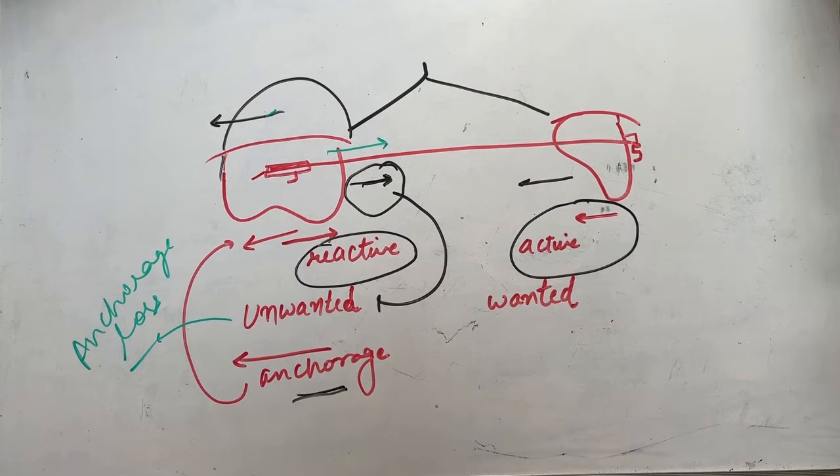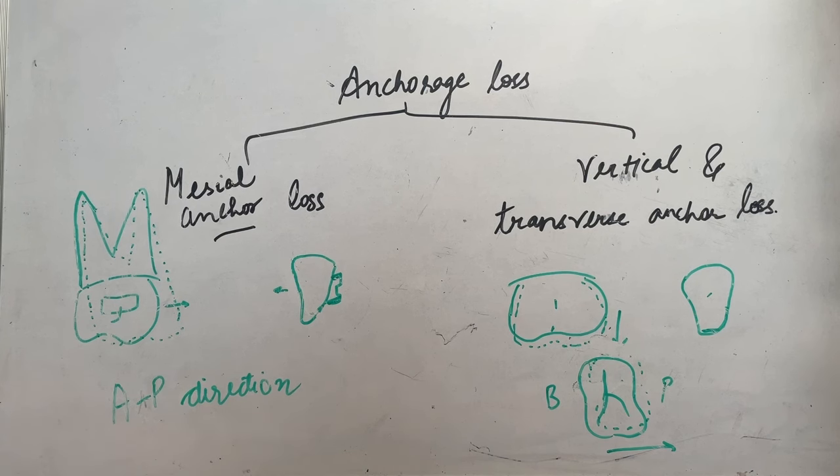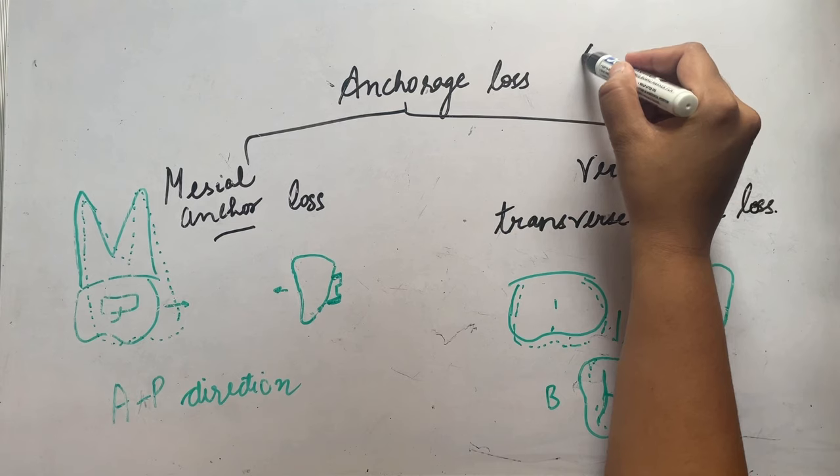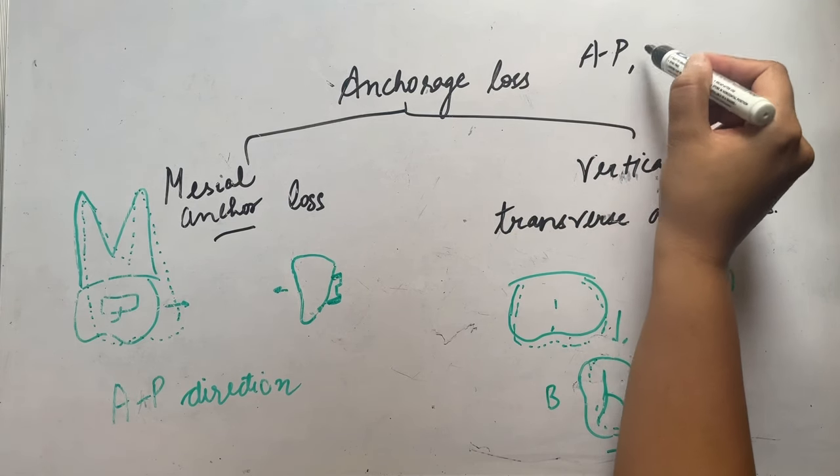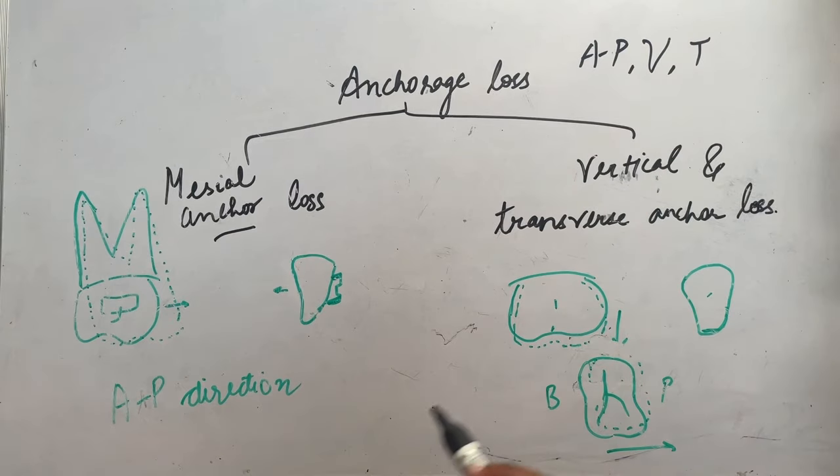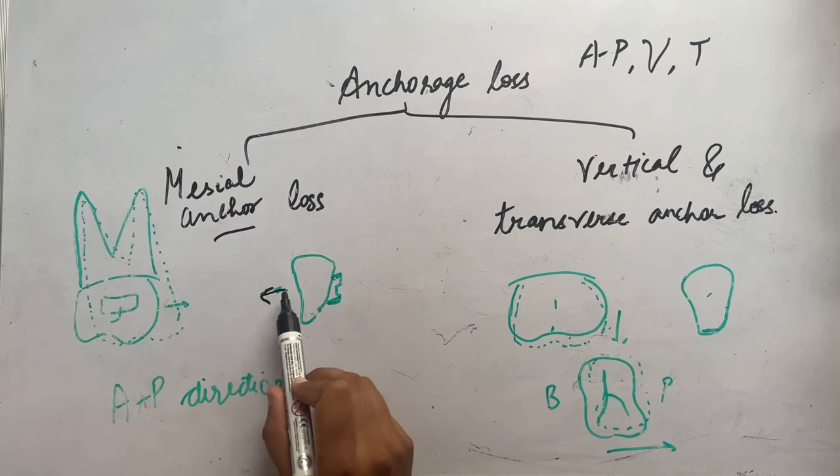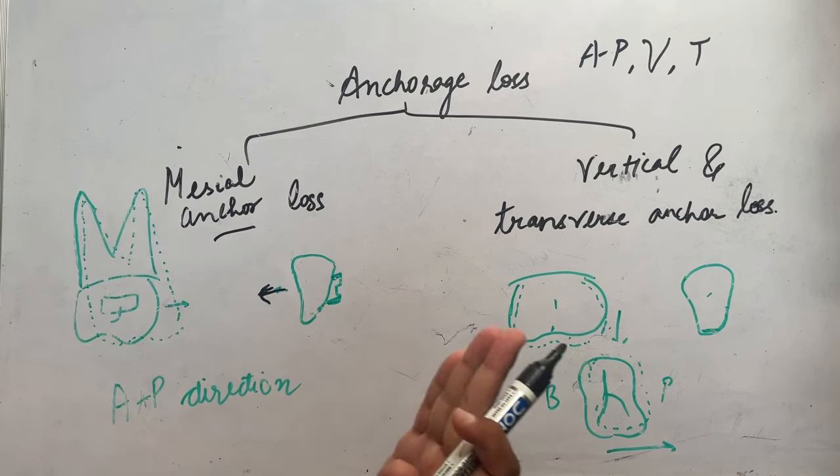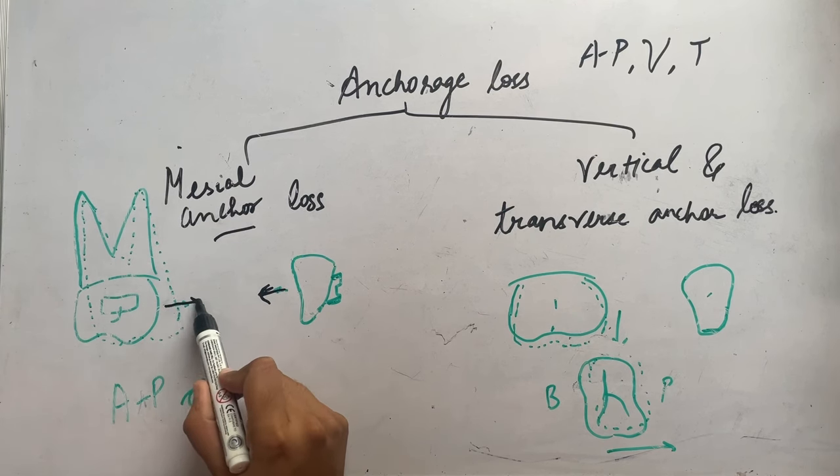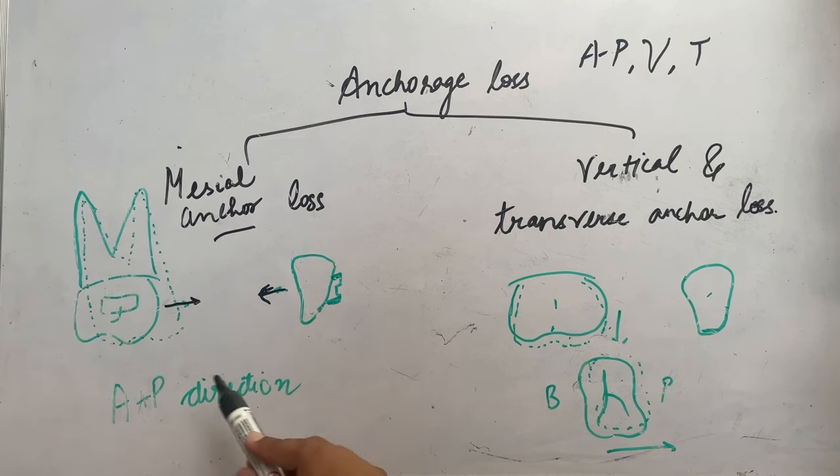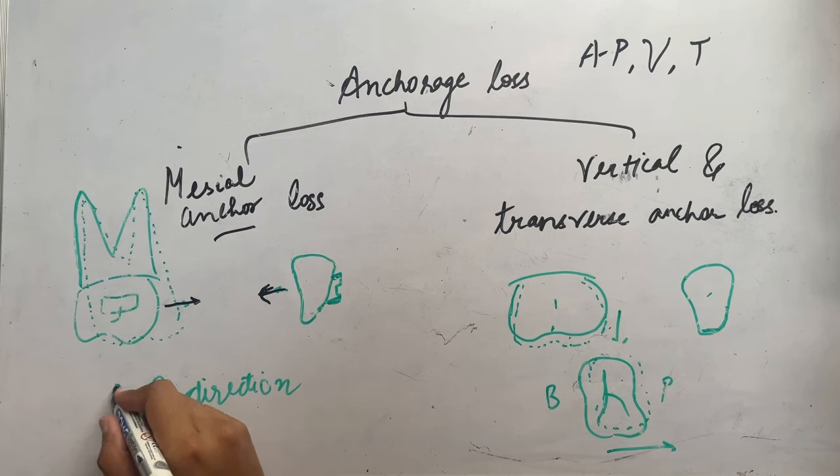This is my anchor loss. We will study anchor loss in all three directions: anterior-posterior direction, vertical direction, and transverse direction. First is anterior-posterior, which could be mesial, generally it is mesial anchor loss. In this case we can see that for incisor retractions during space closure, as we retract the incisors, there is a mesial movement on the molar. This is anchor loss in anterior-posterior direction.